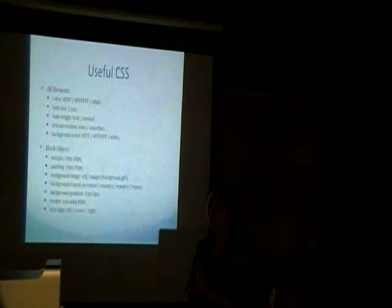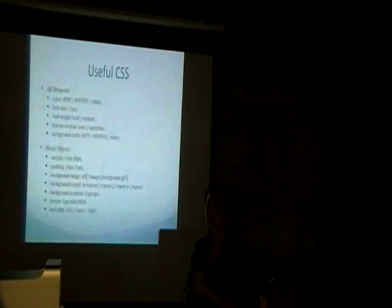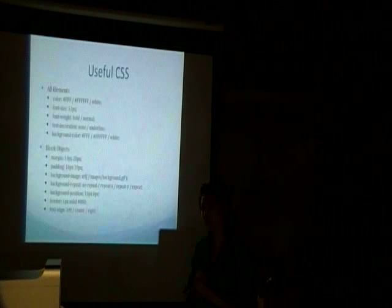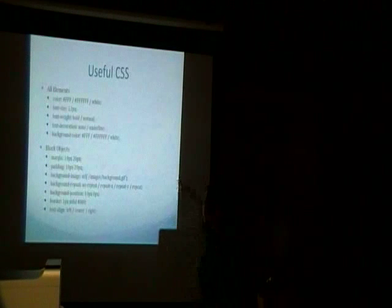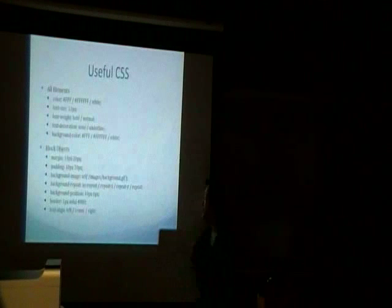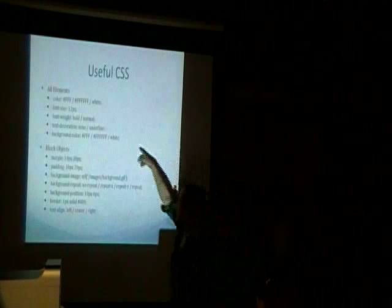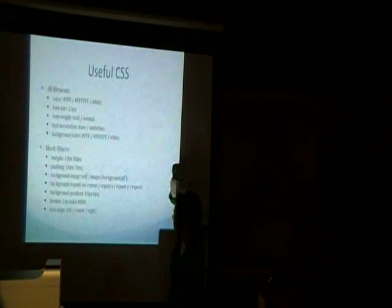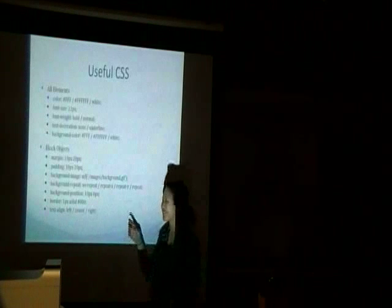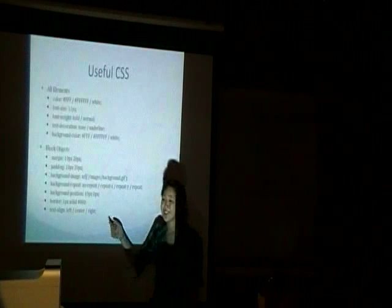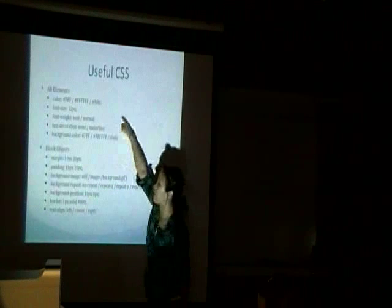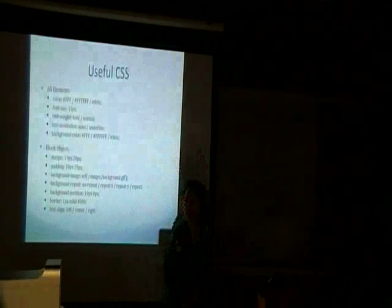For block objects, CSS properties like margin, padding, and background apply. You can actually use all of these things — it's important to know what type of element you're applying a property to, because some things don't make sense. For example, applying text-align to a link doesn't really make sense. Blocks can have all of these things.